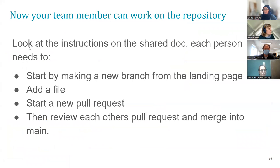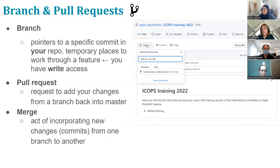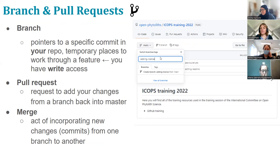Once one of you has done that, each of you is going to make a new branch on the landing page, add a file, and then do a pull request. Each of you is also going to review one of those pull requests. Go to the landing page and press the main grey button, name a branch, press create branch, and then make the change in that branch. It's the same as we've just done — make the change, go into the pull request, keep pressing create pull request, put a title, and save the pull request with the green button at the bottom.